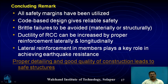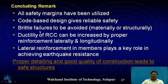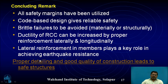In conclusion: all safety margins have already been utilized in the codes; code-based design using IS 1893 and IS 456 gives reliable safety. Brittle failures must be avoided — materials and structures must not fail in brittle mode. Ductility of RCC can be increased by proper reinforcement both laterally and longitudinally. Lateral reinforcement, especially stirrups, plays a key role in achieving earthquake resistance by providing confinement of concrete. Proper detailing and good quality of construction lead to safe structures.